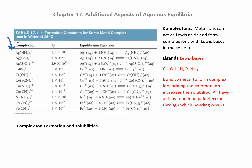A ligand is like a Lewis base — they have extra electrons they donate. You have a metal cation (positive) and these ligands donating their electrons. This process is called a formation reaction, and the equilibrium constant is called Kf. Kf values are huge — on the order of 10²⁵ — meaning the reaction goes essentially all the way to the right as soon as the ligand finds the metal.